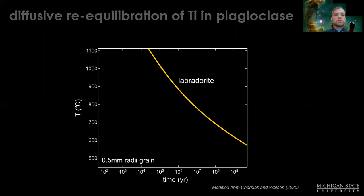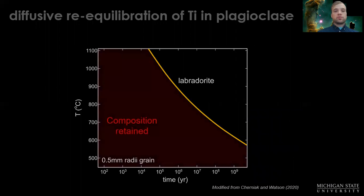If you look at the diffusive reequilibration of titanium in plagioclase, you can see that in this red field here, for any temperature or amount of time on the x-axis that's in the red field, that old composition is retained.